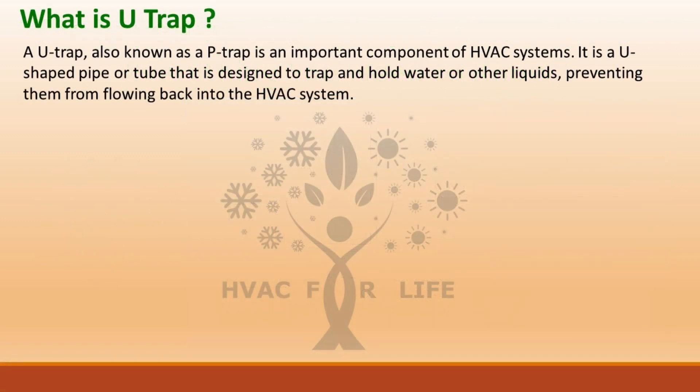What is a U-TRAP? A U-TRAP, also known as a P-TRAP, is an important component of HVAC systems. It is a U-shaped pipe or tube that is designed to trap and hold water or other liquids, preventing them from flowing back into the HVAC system.